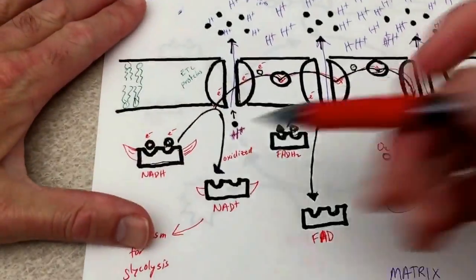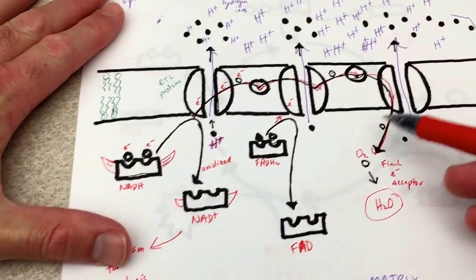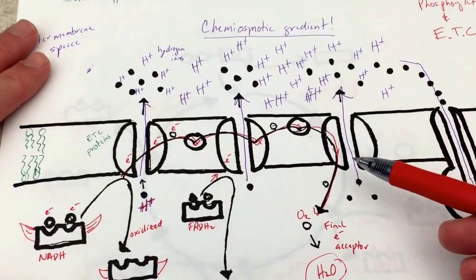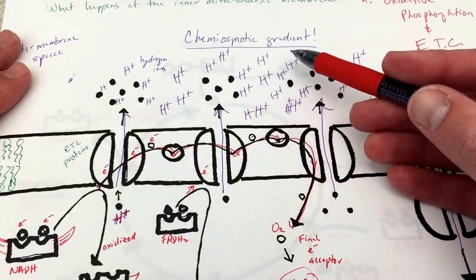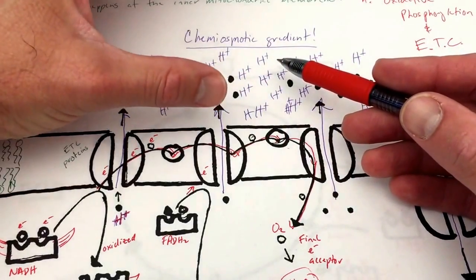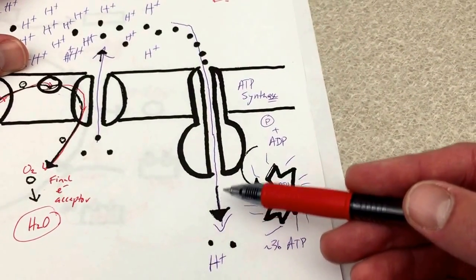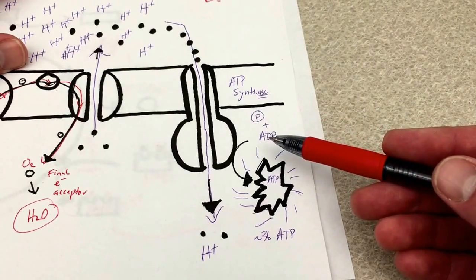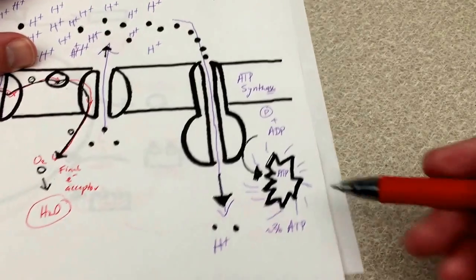When NADH and FADH2 drop off their electrons at these proteins, those electrons are transported from one protein to the next, to the next, to the next. We can create a proton gradient — also known as a chemiosmotic gradient — like water building up behind a dam. When they flush through ATP synthase, that gives ATP synthase enough energy to phosphorylate — to add a phosphate onto ADP — giving us about 36 ATP.